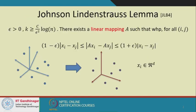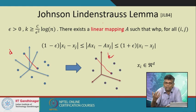Just to remind you, we were studying the Johnson-Lindenstrauss Lemma. What it says is that if you are given a set of points x1 to xn in some d-dimensional space — and it does not really matter how big d is — you are interested in creating a mapping that creates images of these points in some lower-dimensional space, call it K, such that the pairwise distance between any two points is more or less preserved to a multiplicative factor of 1 ± ε.